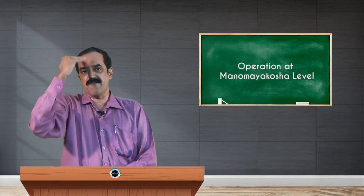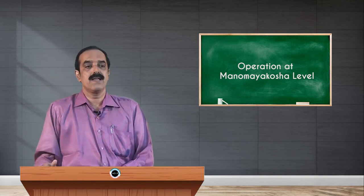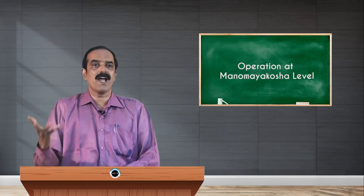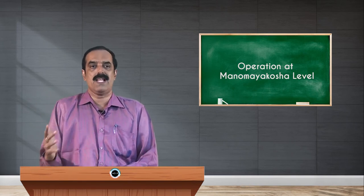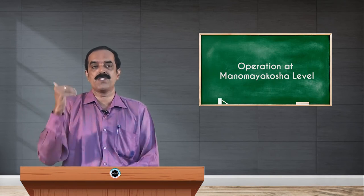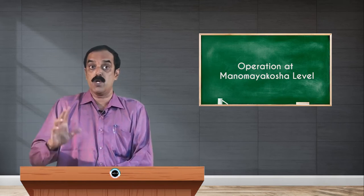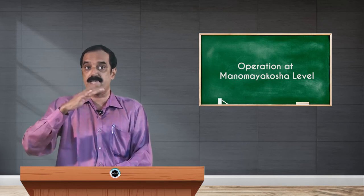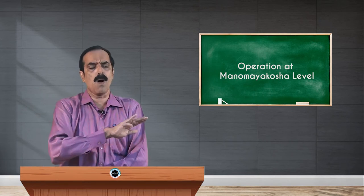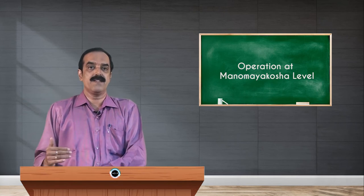Coming to pranamaya kosha — there is a strong ignorance, avidya, at the vijnanamaya kosha level, and a disturbance at the anandamaya kosha level. This adhi starts percolating into the pranamaya kosha. In between mind and body is the pranamaya kosha, with innumerable nadis through which prana flows — pranasyedam vashe sarvam tridiveyat pratishtitam — prana is present everywhere in all layers. When disturbed, there is a hazardous flow of prana and agitation of nadis.